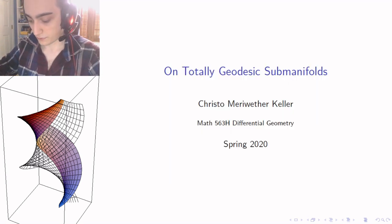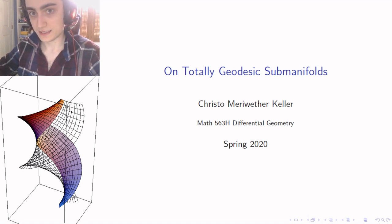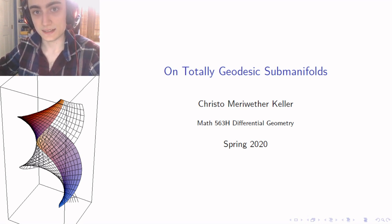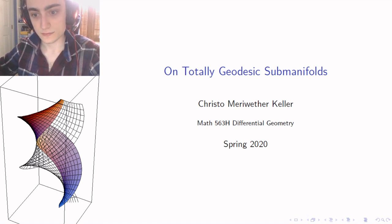The sorts of manifolds we're talking about are differentiable, which means they're basically spaces like the earth in the sense that at every point on the space it looks like you're standing in a Euclidean space — an R^n with a Euclidean metric.